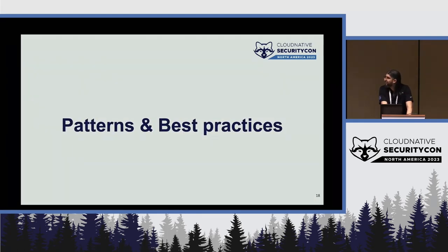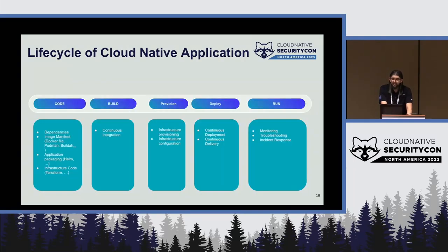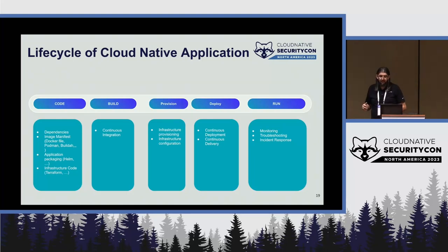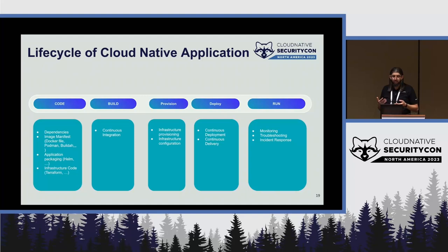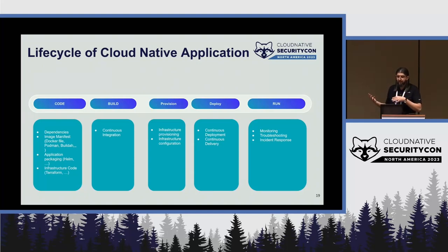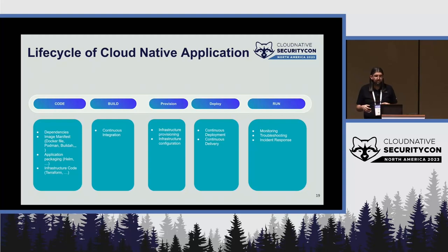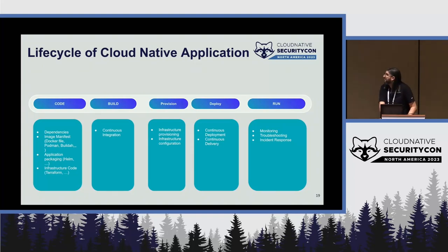Now let's look at the lifecycle of a cloud-native application. We have five main phases: code, build, provision, deploy, and run. In the code phase, we produce business logic, dependencies, and manifests like Dockerfiles, application packages, Helm charts, and Terraform for infrastructure. Build is continuous integration — building the image. Provision is infrastructure setup and configuration. Deploy is a continuous deployment or delivery pipeline. And run involves monitoring workloads, troubleshooting, and incident response.